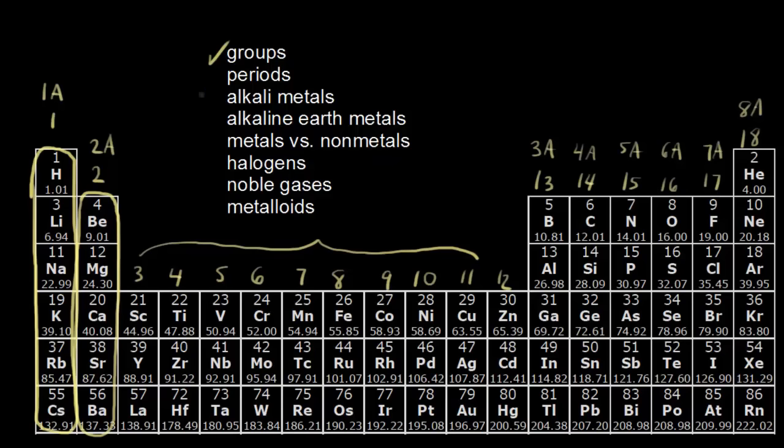Let's move on to the concept of periods. A period is a horizontal row on the periodic table. If I look at period one and just move across my periodic table, hydrogen is in the first period and so is helium. I move on to the second period - lithium, beryllium, boron, carbon, nitrogen, oxygen, fluorine, and neon.